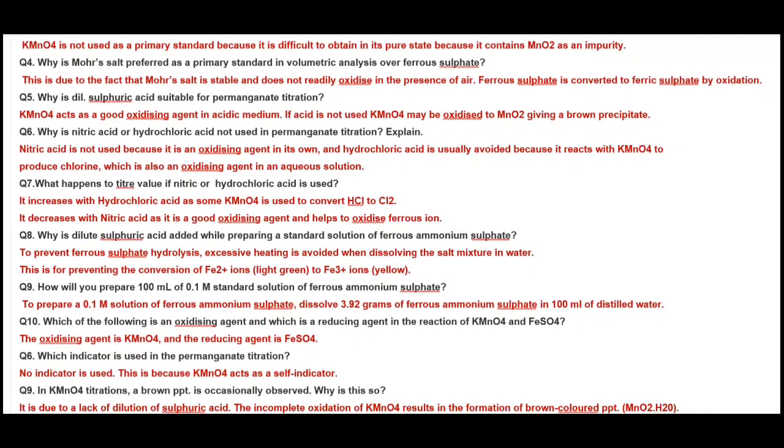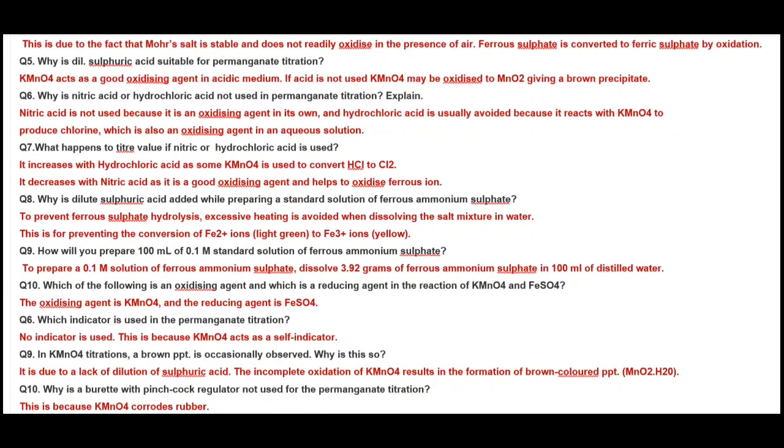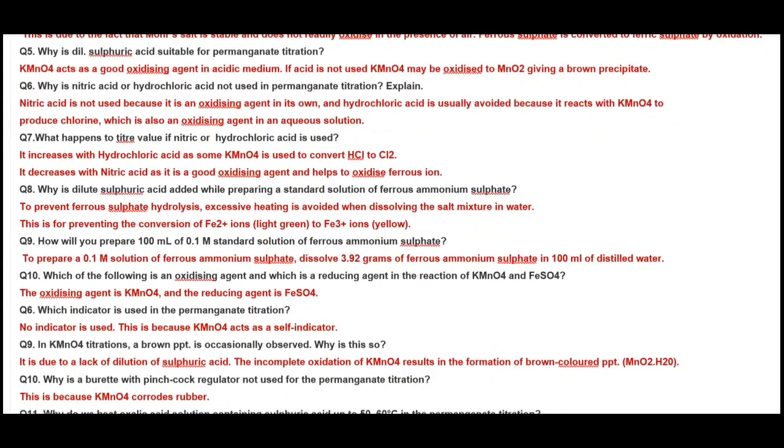Why is dilute sulfuric acid suitable for permanganate titrations? KMnO4 is a good oxidizing agent in acidic medium and converts to Mn2+. If acid is not used in neutral medium it gets reduced to MnO2 giving a brown precipitate. So we use dilute sulfuric acid to create this acidic medium.